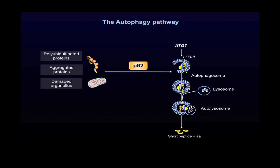In this study, we focused on the autophagy pathway, which is a bulk-degradative process involved in the degradation of polyubiquitin proteins, aggregated proteins, or damaged organelles. In this pathway, P62 is a key player. P62 is a scaffold protein that allows the degradation of the targeted protein through lysosomal degradation.